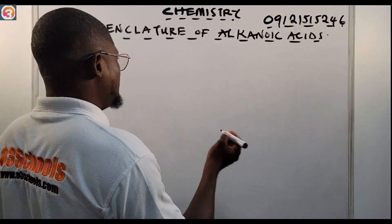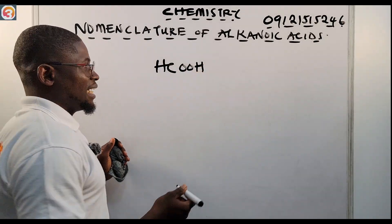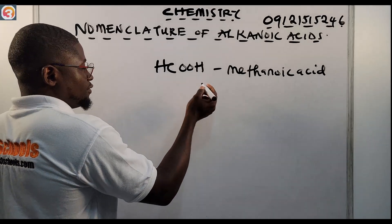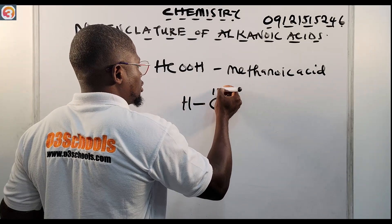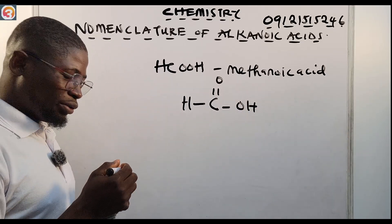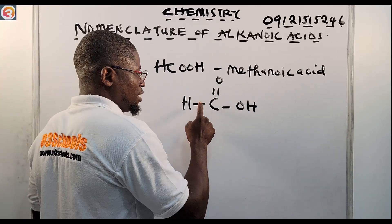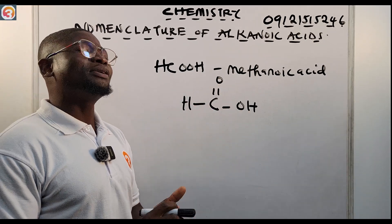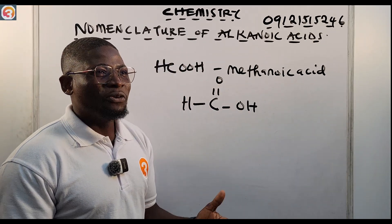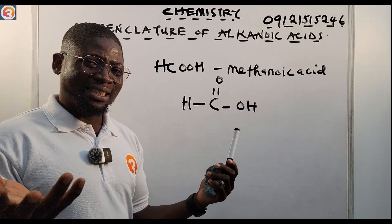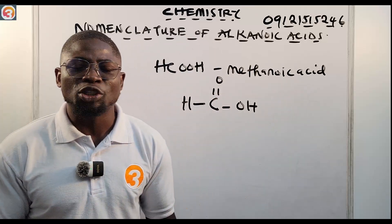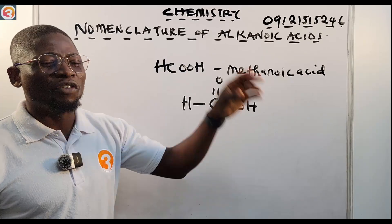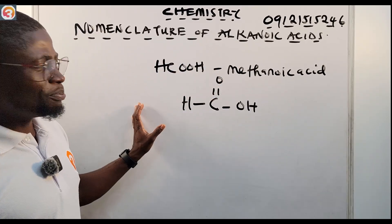The simplest member is HCOOH, which is methanoic acid. If you draw that structure, you have H, then C double bonded to O, then your OH. You can see there can only be four bonds surrounding a carbon atom — one, two, three, four — so it's complete. This is our methanoic acid.